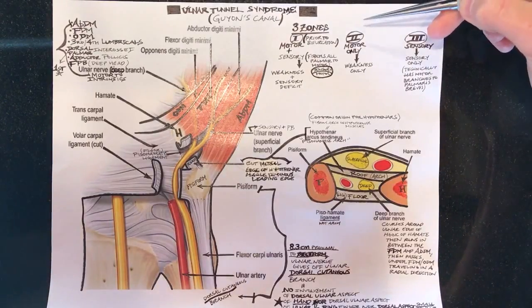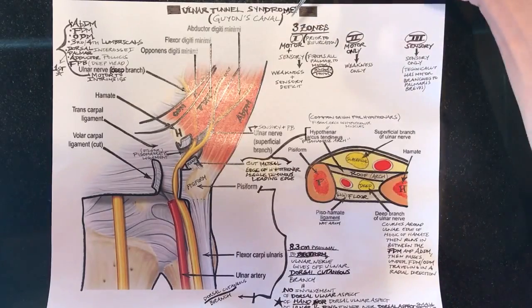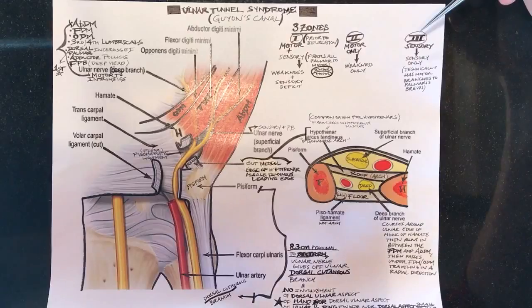Now let's talk about these three zones that are sometimes tested. Basically they were classified into one, two, three based on whether there was motor and sensory or motor only or the sensory part.